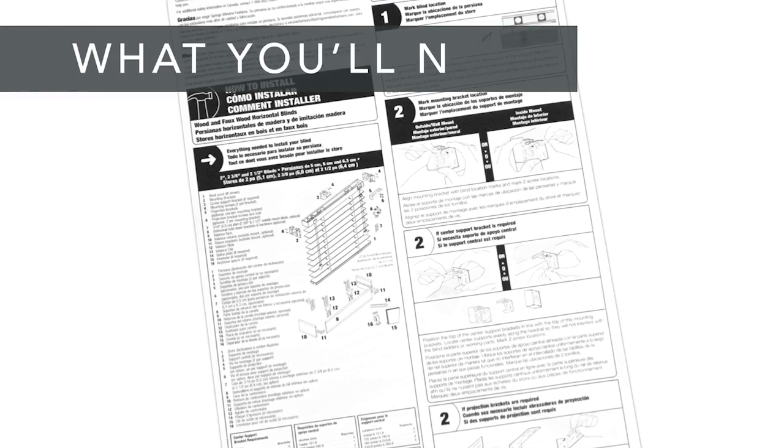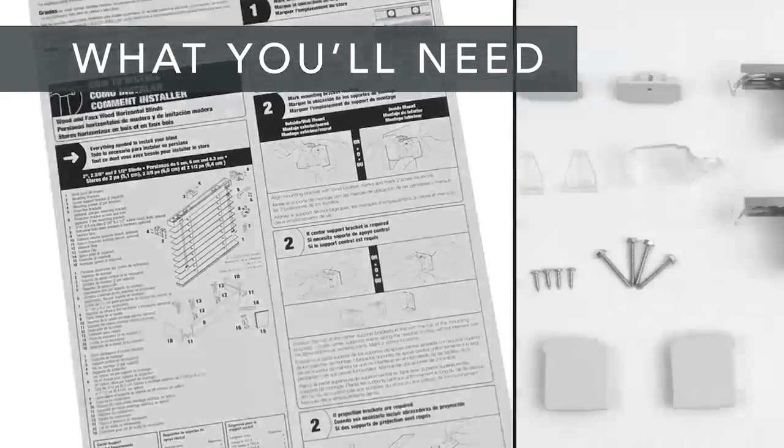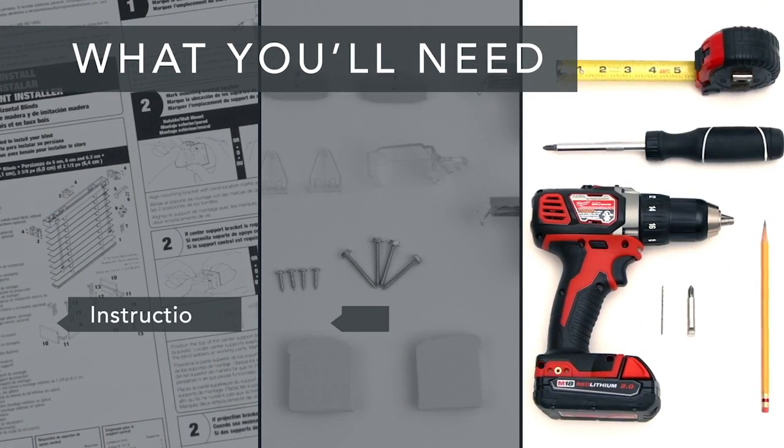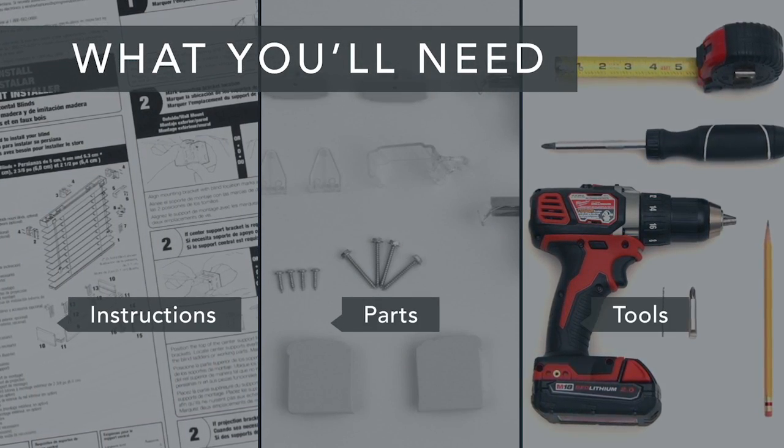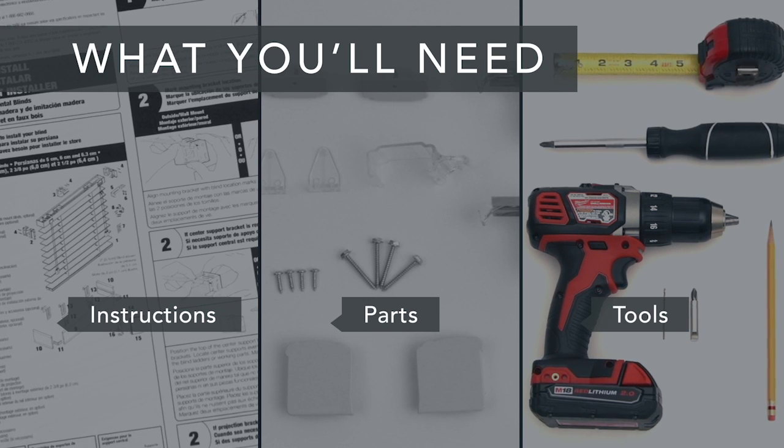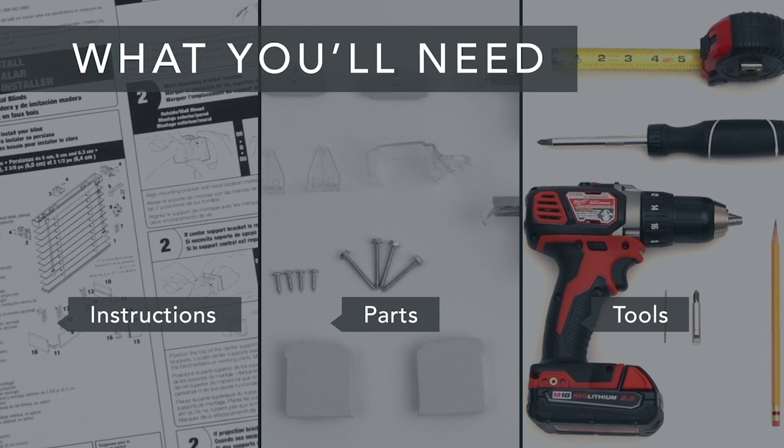First, take a look at the installation guide and packing slip that were included with your valance. Make sure you have all of the parts and all of the tools you'll need. And if you're installing into anything other than wood, get the appropriate screws and anchors.